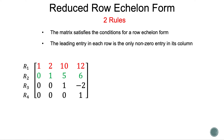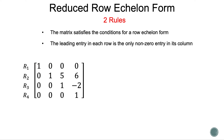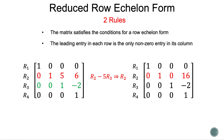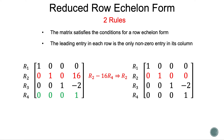Let's transform row 1 using row 1 minus 2 times row 2. Our new row 1 will be 1, 0, 0, and 0. Let's rewrite our matrix and show our next step. Let's transform row 2 using row 2 minus 5 times row 3. Our new row 2 will be 0, 1, 0, and 16. Let's rewrite again. Now let's transform row 2 using row 2 minus 16 times row 4. Our new row 2 will be 0, 1, 0, and 0.